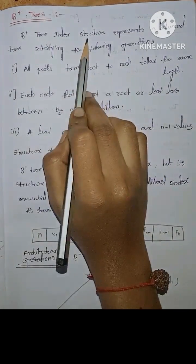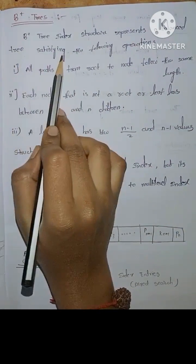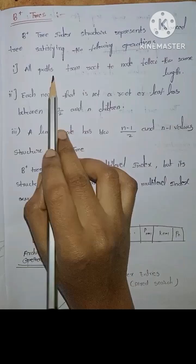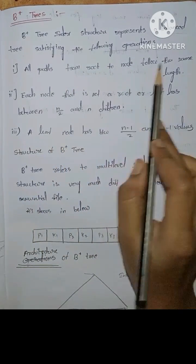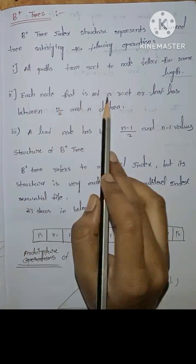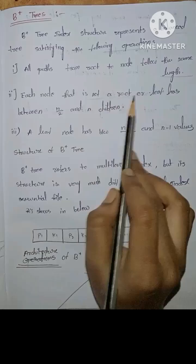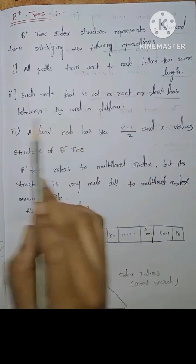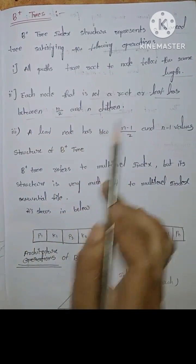B plus tree's index structure represents a balanced tree satisfying the following operations. All paths from root to the node follow the same length, and each node that is not a root or leaf has between n by 2 and n children.